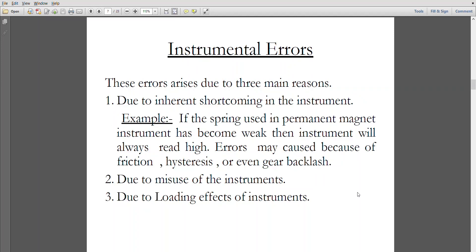Instrumental errors. These errors arise due to three main reasons. Due to inherent shortcoming in the instrument - example: if the spring used in the permanent magnet has become weak or doesn't have the tensile or compressive strength, then the instrument will always read high or low values. The errors may be caused because of friction, hysteresis, or even backlash. Second, due to misuse of the instrument. Third, due to loading effects of the instrument.